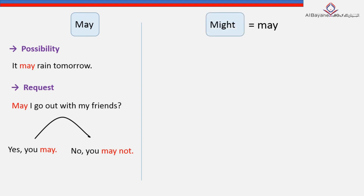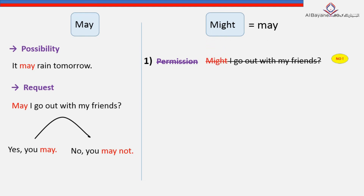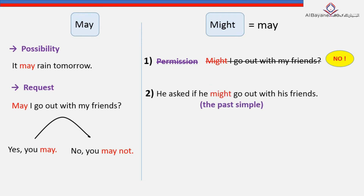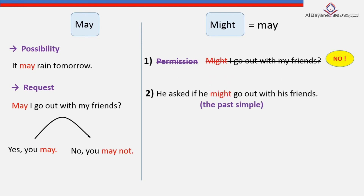'Might' has the same function as 'may' — we can use it to talk about possibility or request. But there are two differences. First, we can't use 'might' for permission — we don't say 'Might I go out with my friends?' Second, we consider 'might' as the past simple of 'may.' Such as: 'He asked if he might go out with his friends' — this sentence is in the past simple.